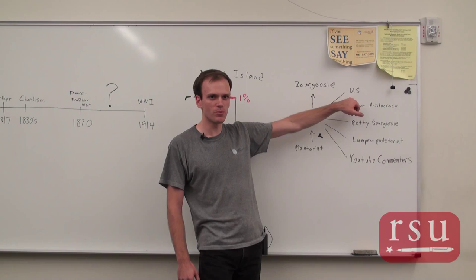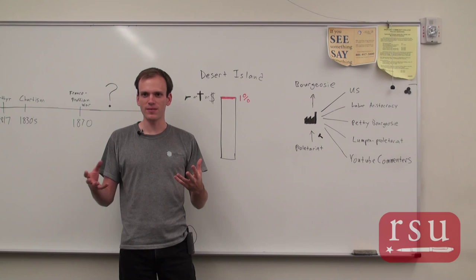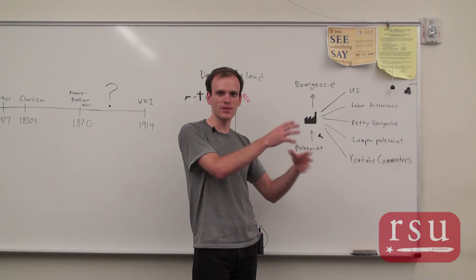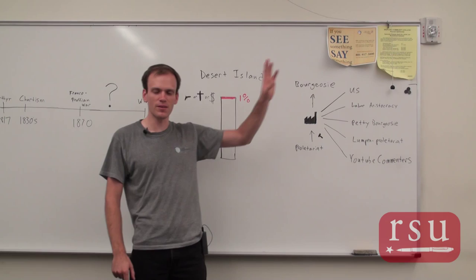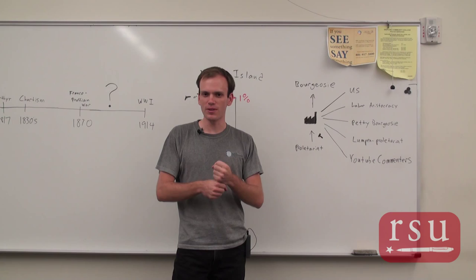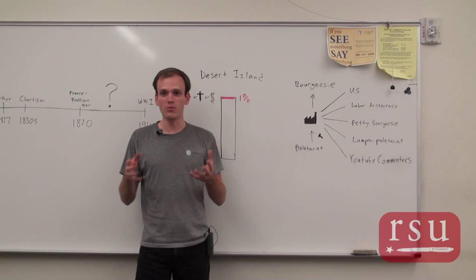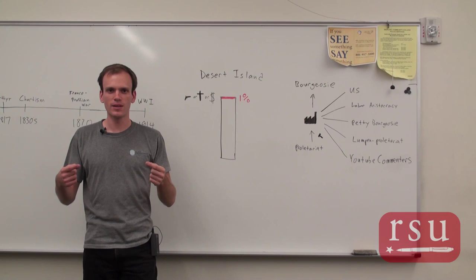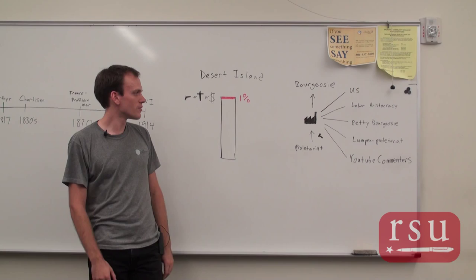Whatever classes we talk about, we're talking about a group of people who have a particular relationship to the way a society makes its living — the means of production. For example, I work for a courier company. I deliver goods; I don't make things necessarily. My wage is still connected somehow to production, to factories in China that make iPhones and print books. If you think about it, you can probably trace what you do every day back to something relating to the means of production. That's how classes are formed.